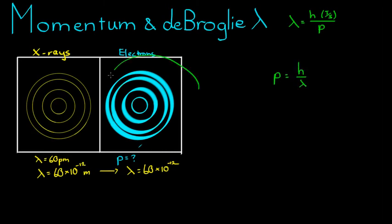So the momentum of these electrons here is equal to Planck's constant, which is equal to 6.63 times 10 to the negative 34 joules seconds, over 60 times 10 to the negative 12. I'll run this to the calculator.